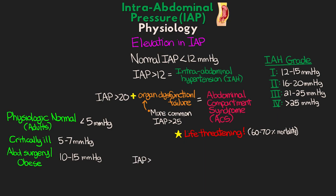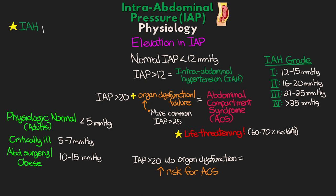If the pressure is greater than 20 and we don't have organ dysfunction yet, these patients are considered high-risk for ACS and need close monitoring. Generally in the ICU, when measuring intra-abdominal pressure, we're focused on keeping pressure less than 20. We can further optimize therapy for IAH to get patients back into a more normal range, and in cases where IAH is present, we do want to trend these measurements to ensure the patient isn't worsening.